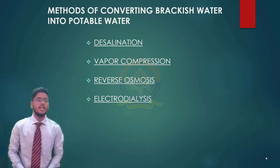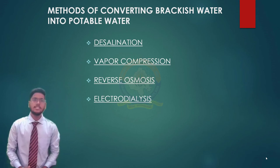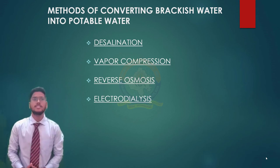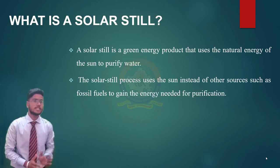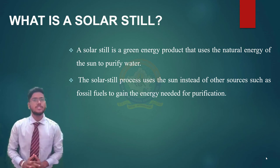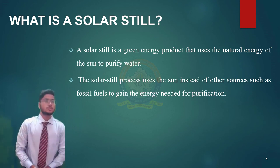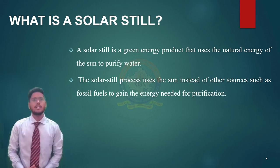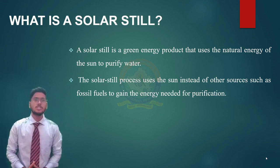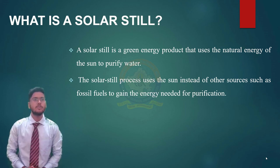So what differences can we see here? In distillation, thermal energy is used, while in vapor compression, reverse osmosis, and electrodialysis, mechanical and electrical energy are used. We discussed distillation in previous slides, and for distillation, solar stills are used. A solar still is a green energy product that uses the natural energy of the sun to purify water. The solar still process uses the sun instead of other sources such as fossil fuels to gain the energy needed for purification.